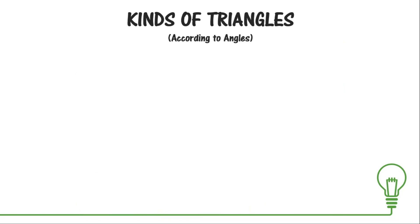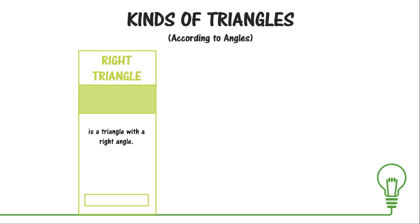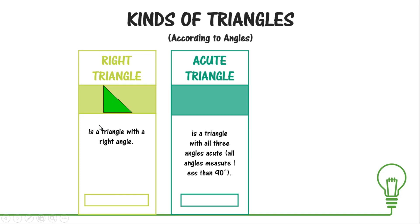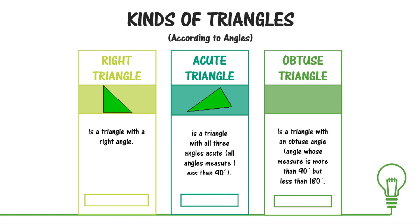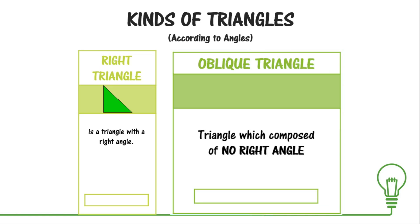We may now proceed with the kinds of triangles, which can be classified into two: according to angles and according to sides. According to angles, the first is a right triangle — a triangle wherein one of its angles measures 90 degrees. Next is an acute triangle — a triangle with all three angles acute, meaning all angles measure less than 90 degrees. The last kind by angles is an obtuse triangle, where one angle measures more than 90 degrees but less than 180 degrees. Both acute and obtuse triangles can also be called oblique triangles — triangles with no right angle.